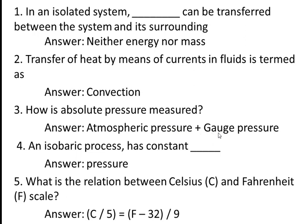Fourth question: an isobaric process has constant — answer is pressure. An isobaric process is nothing but a constant pressure process. There are other two kinds of processes: isochoric process, which is a constant volume process, and isothermal process, which is a constant temperature process.